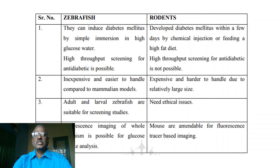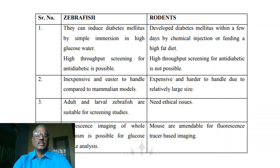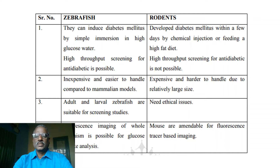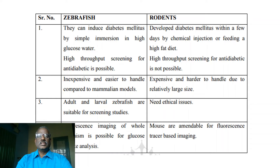Zebrafish are inexpensive and very easy to handle, but in rodents it is expensive and very hard to handle. Adult and larval zebrafish are suitable for screening studies, but rodents require ethical approvals. Fluorescence imaging of all organisms is possible for glucose optic analysis in the case of zebrafish, but rodents are not as amenable for fluorescence laser-based imaging. So we prefer the zebrafish for research.